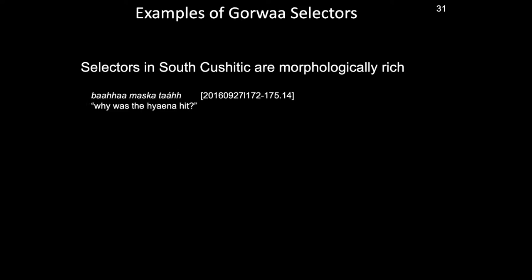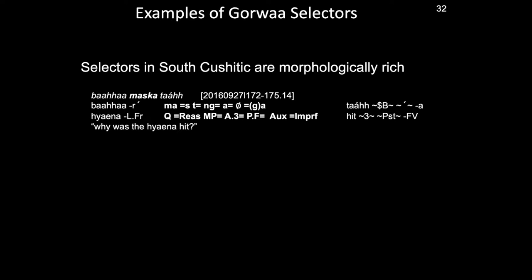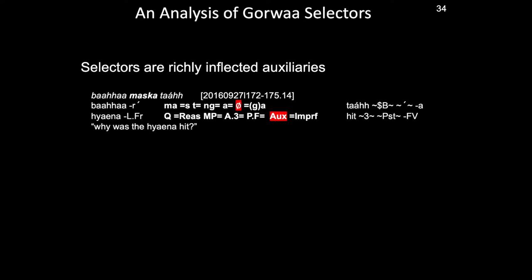Take this form, for example, which simultaneously marks a question, a reason, mediopassive voice, a third person agent, a feminine gender patient, and perfective aspect. In the glossing, it can be seen that the selector itself is a complex of clitics. A central question, then, is what exactly are they cliticizing to?